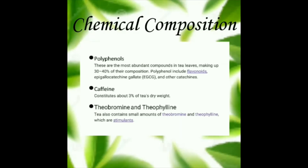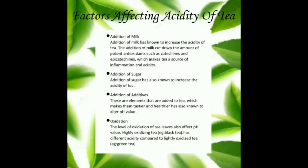Now let us have a view on the acidity of tea. Are teas generally acidic? Yes, teas are generally acidic. The factors affecting the acidity of tea: first is addition of milk. Addition of milk has known to increase the acidity of tea. The addition of milk cuts down the amount of potent antioxidants such as catechins and epicatechins, which makes tea a source of inflammation and acidity.